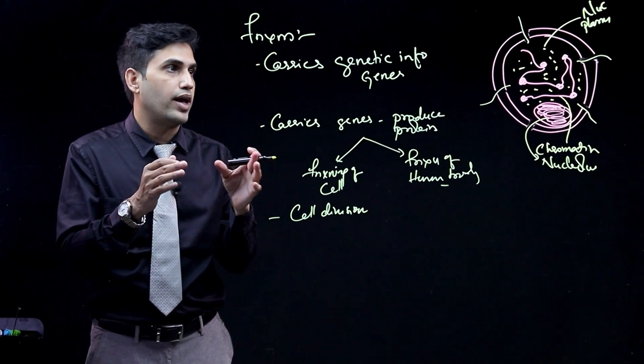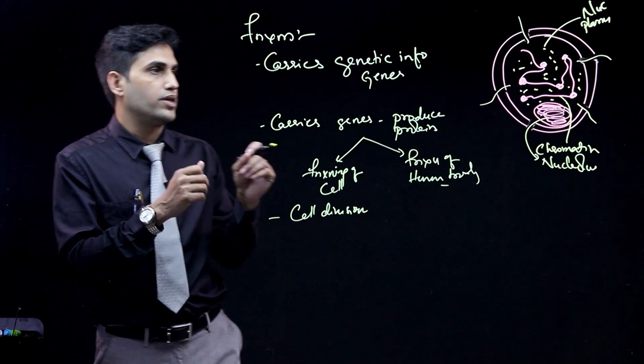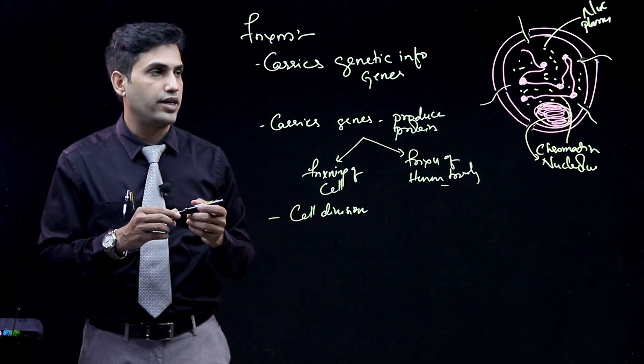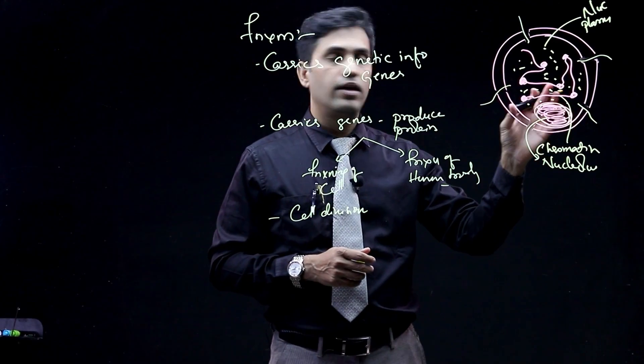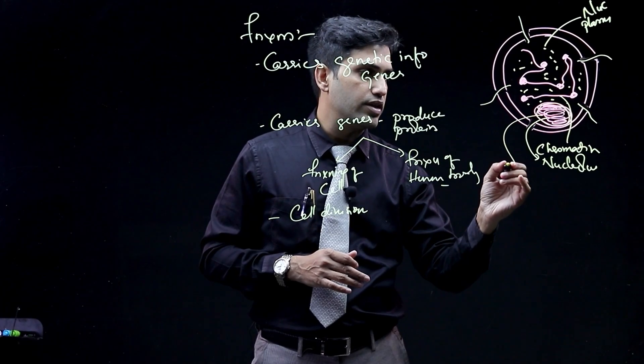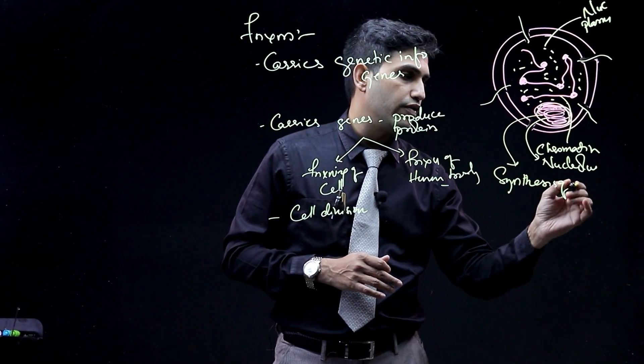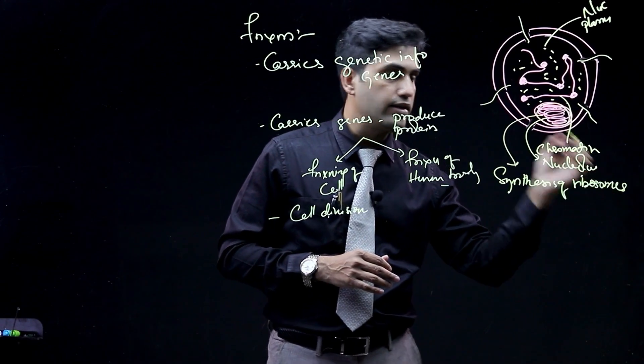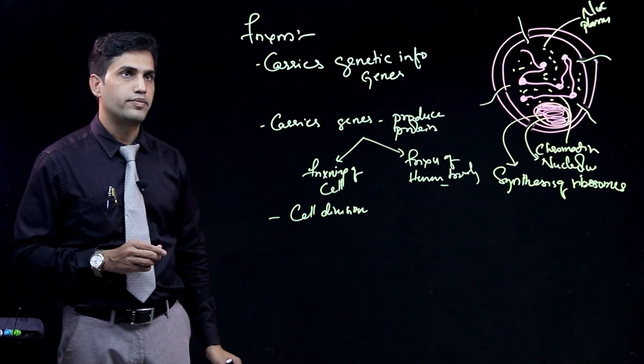Once it goes into mitosis or M phase, what happens is they get condensed to form chromosomes. Then this nucleus - we are having a nucleolus, it is a darkly stained structure inside. This is mainly made up of DNAs. It is the site for synthesis of ribosomes or ribosomal RNA.